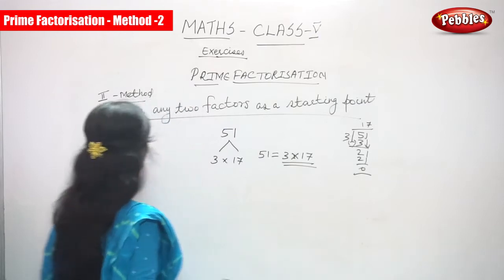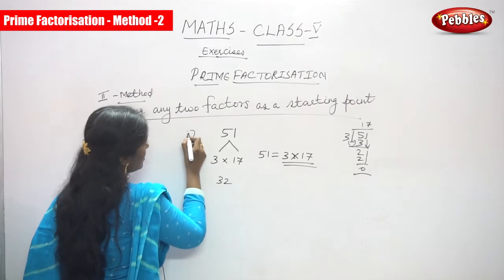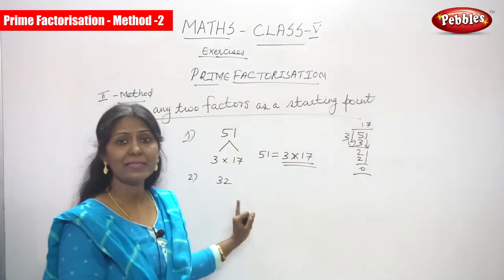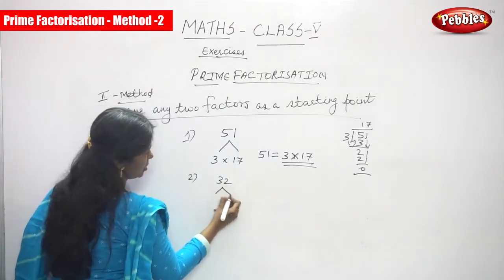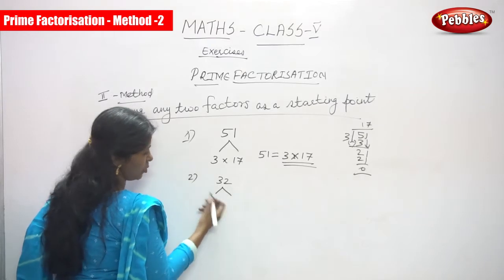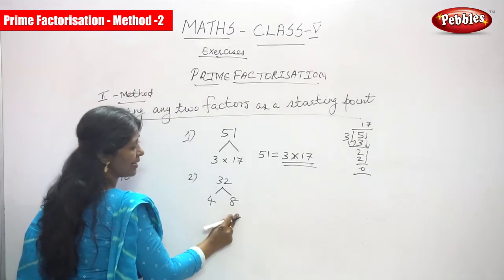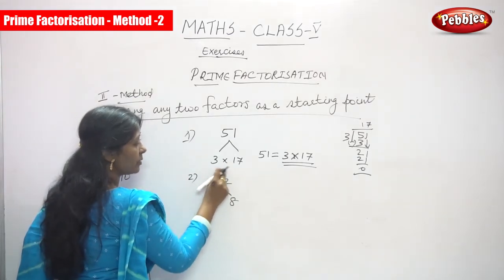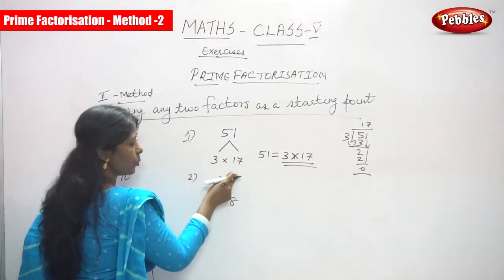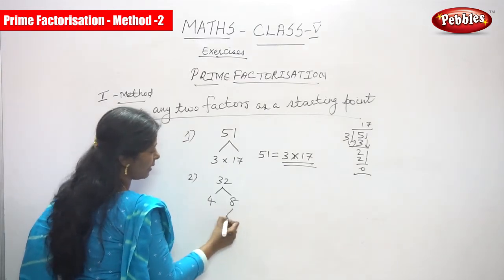The next number is 32. We have to find the factors of 32. Since the heading says any two factors, I have taken 4 and 8. If you divide 32 by 4, you get 8.